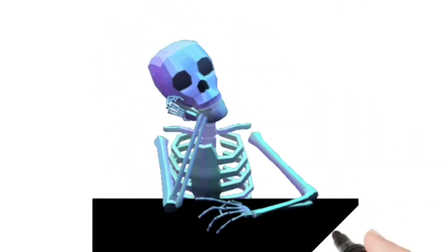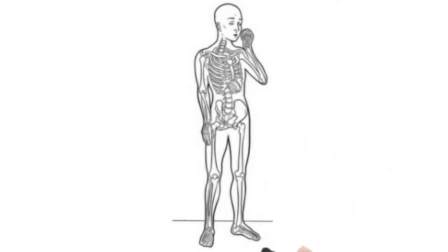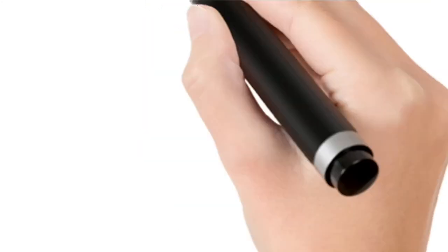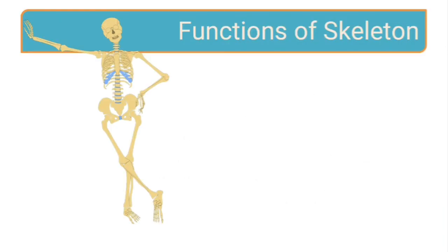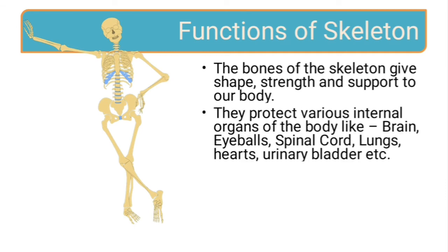What if our skeleton decided to take a holiday? We would no longer look like ourselves. The bones of the skeleton give shape, strength, and support to our body. They protect various internal organs of the body like the brain, eyeballs, spinal cord, lungs, heart, urinary bladder, and so on. Almost all the important organs in our body are protected by our skeletal system.